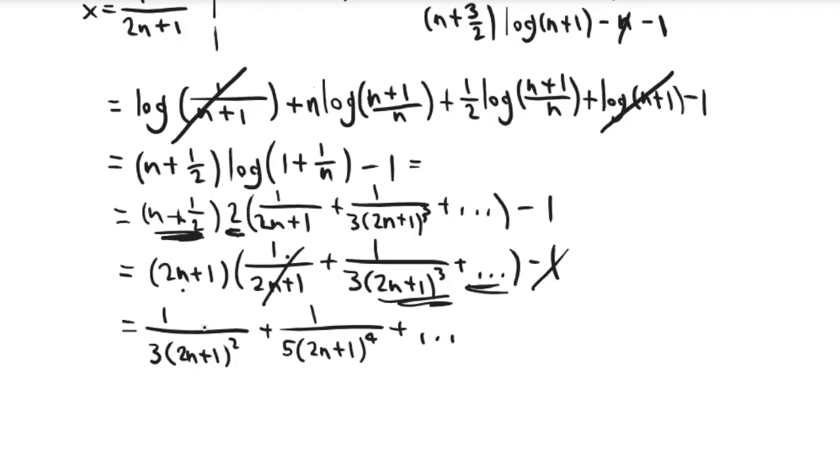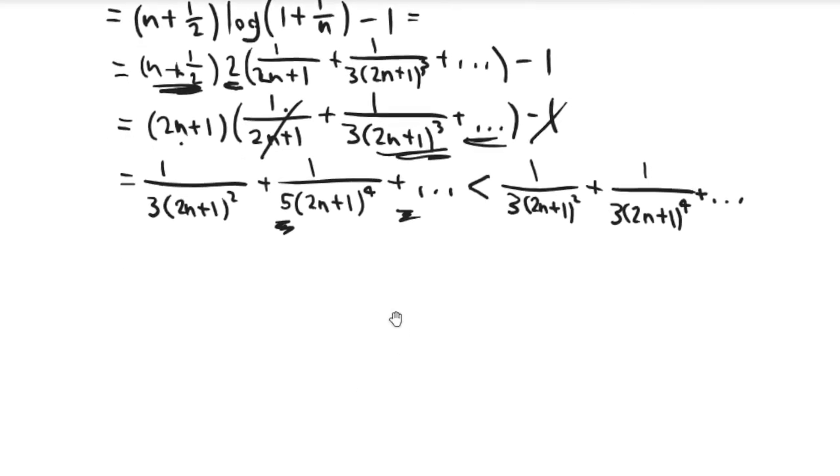Okay. But now we want to notice that, I mean, what's an obvious way that I can bound this above by something, this expression that I have now. So now, this is strictly less than if I just had 1/(3(2n+1)²) + 1/(3(2n+1)⁴) + ... Alright. So basically I'm taking the same expression, but I'm using the fact that the 5 here, there would be like a 7 here and then a 9. And all of those are bigger than 3.